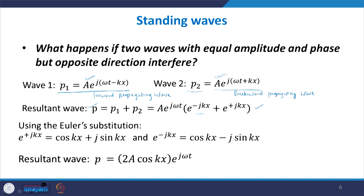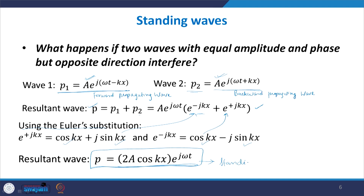Using the Euler substitution, e^(−jkx) = cos(kx) − j·sin(kx) and e^(+jkx) = cos(kx) + j·sin(kx). When you sum them together, the sine terms cancel out, and you are only left with the cosine terms. The end result is 2·cos(kx) · A · e^(jωt). This is the resultant wave, and as you can see, this is a standing wave.